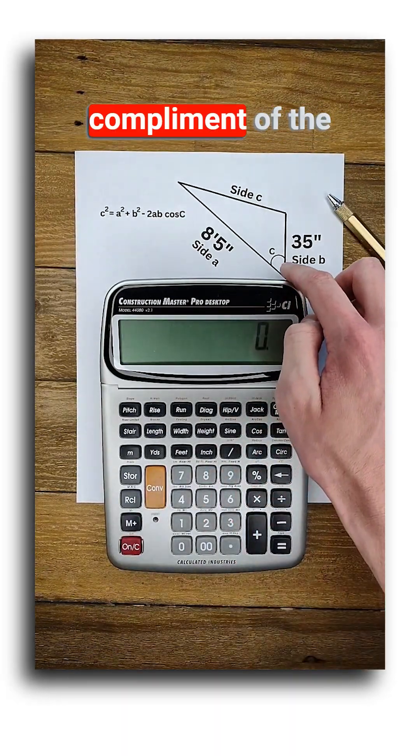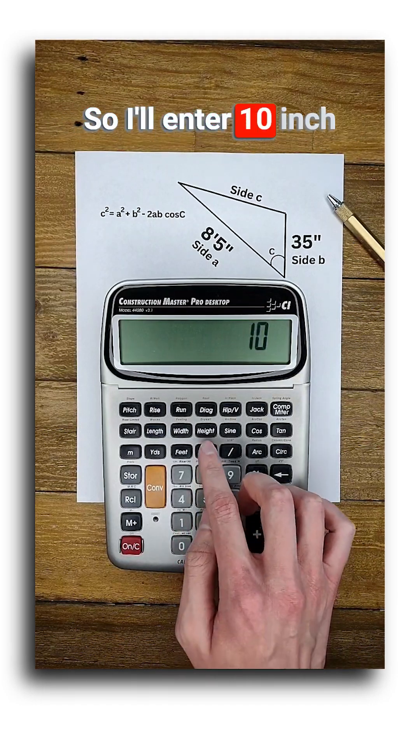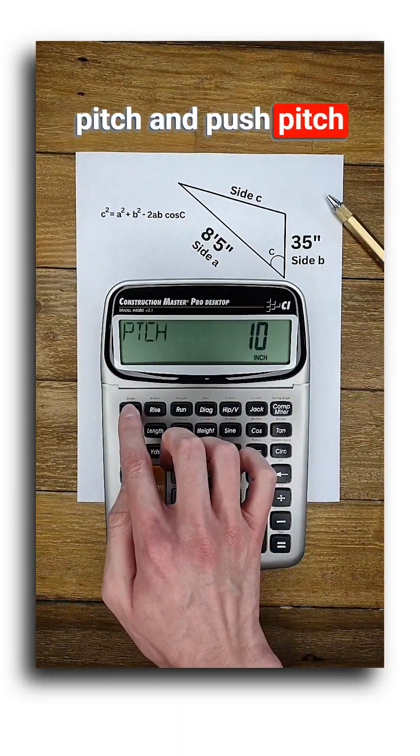Now this angle is the complement of the pitch of the main roof, which is a 10-12 pitch. So I'll enter 10 inch pitch and push pitch again for the angle.